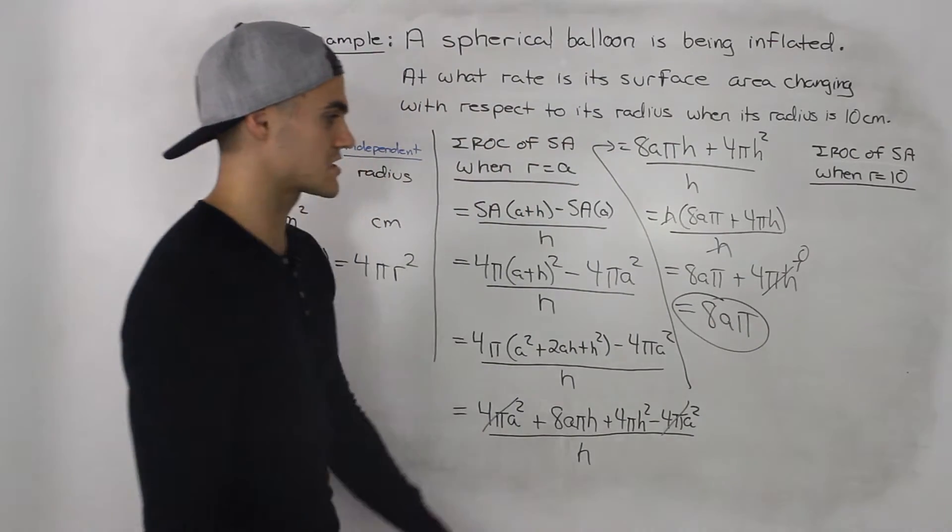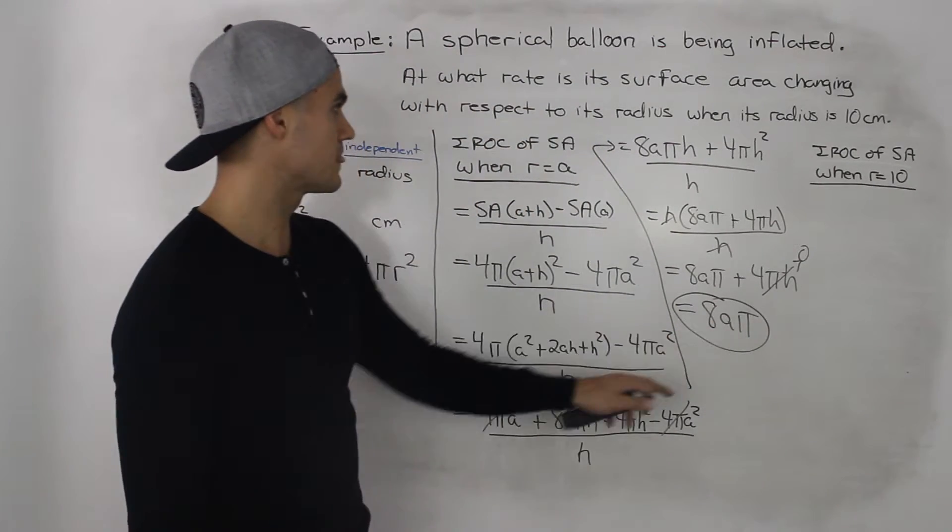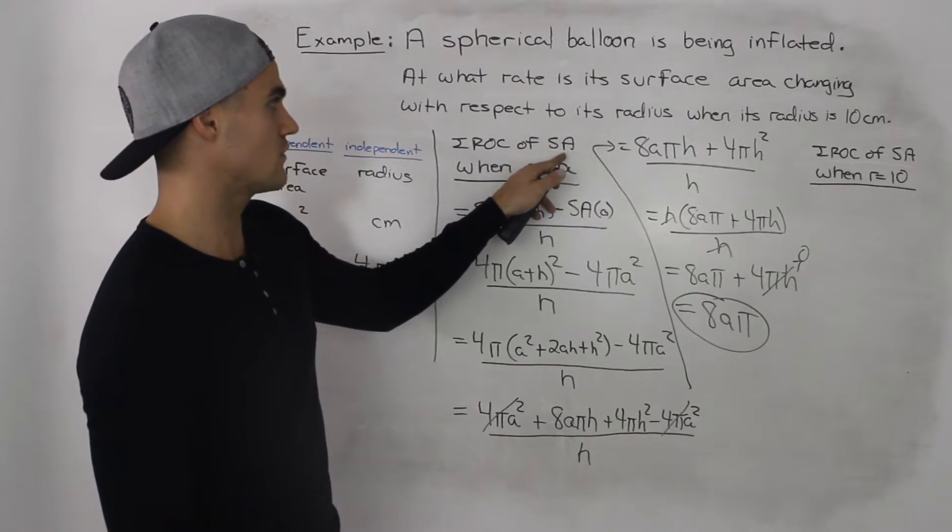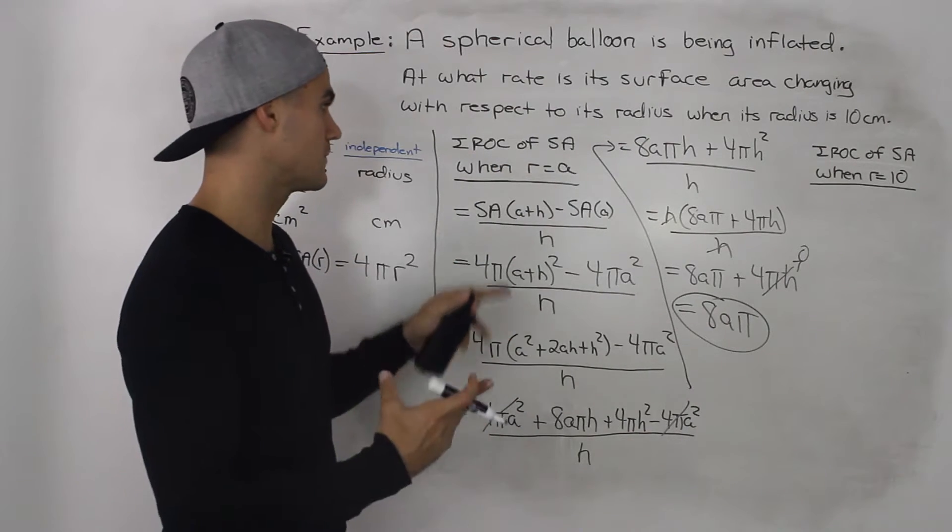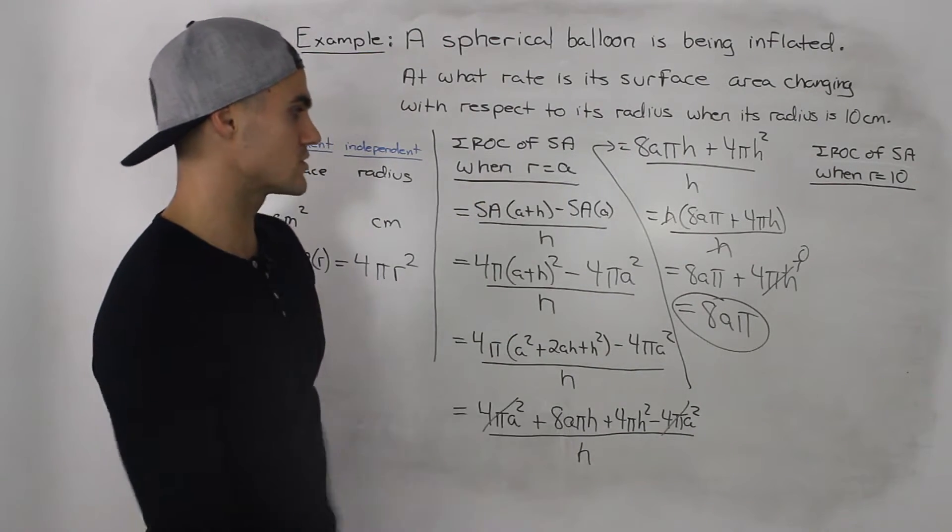So this is the expression 8aπ for the instantaneous rate of change of the surface area of a sphere when its radius is equal to a.